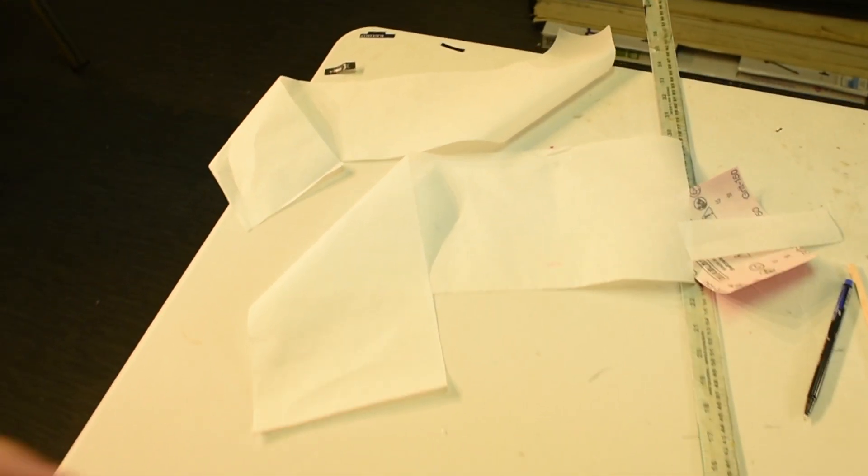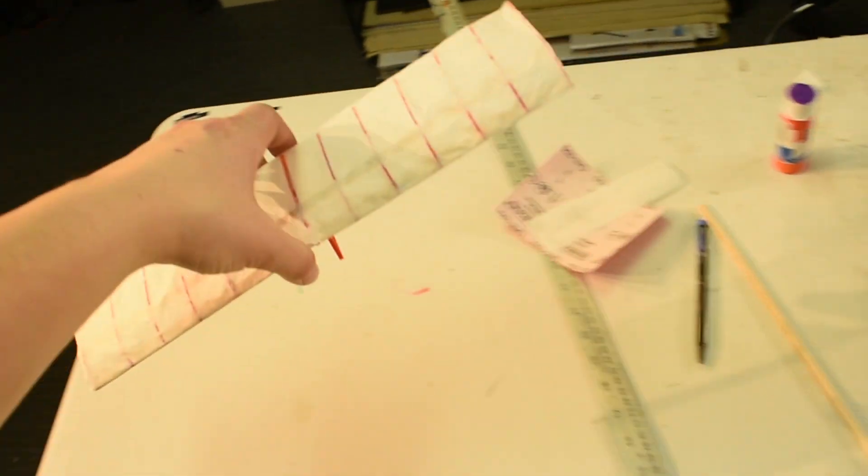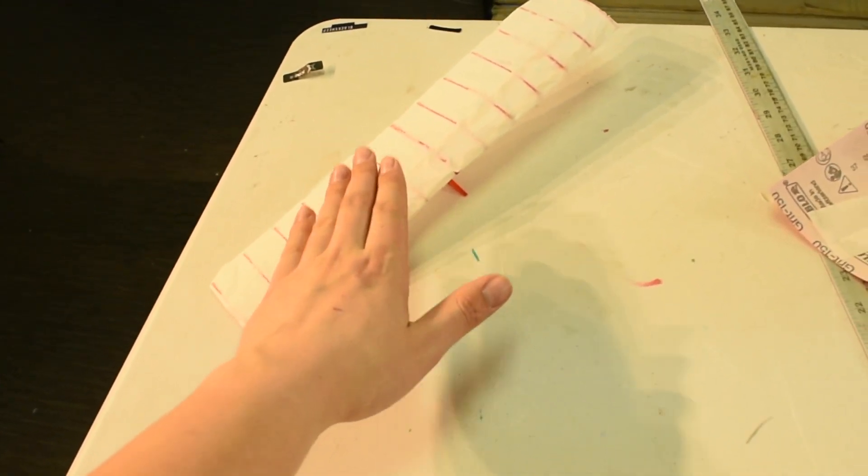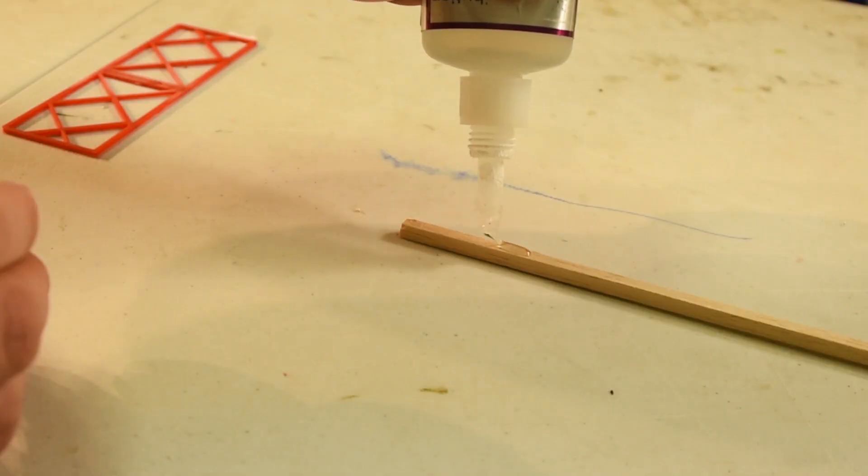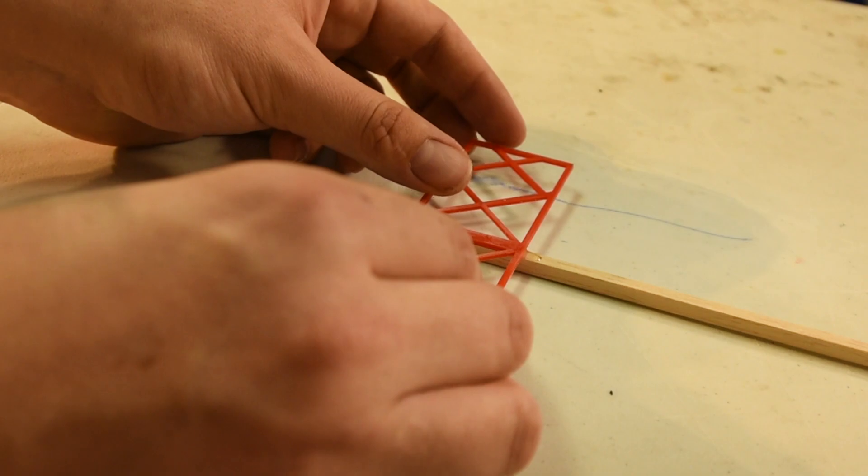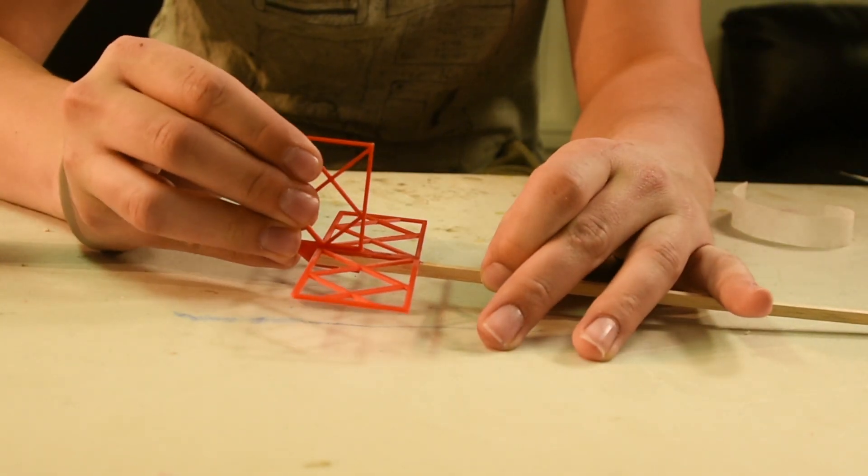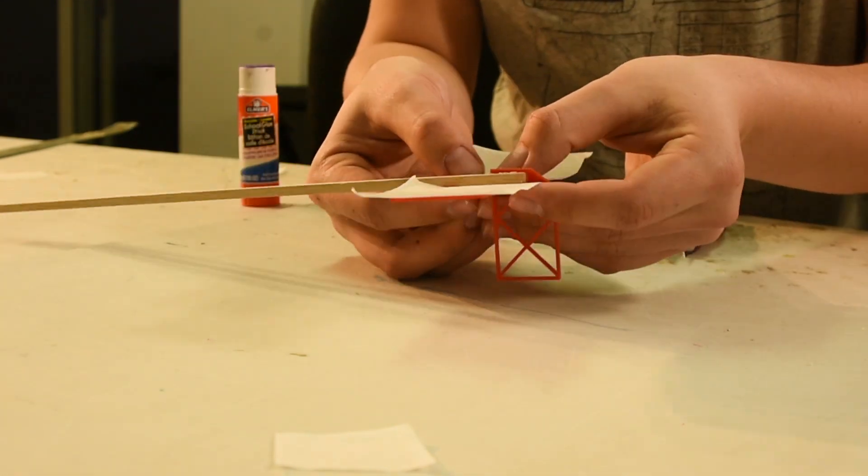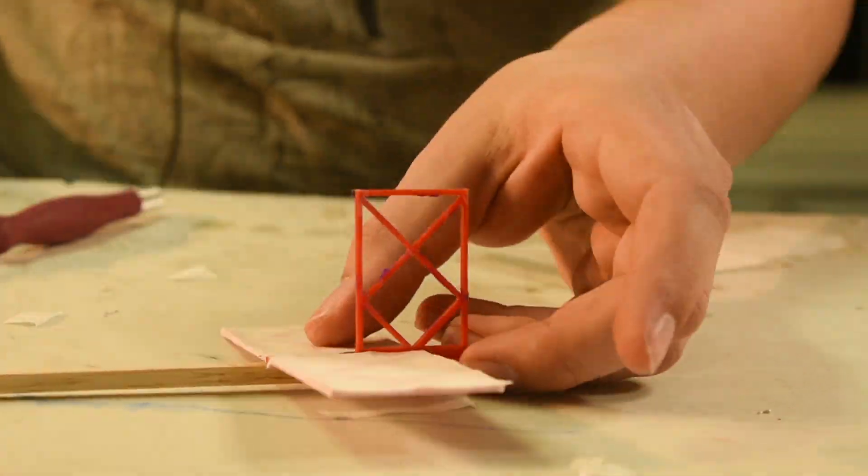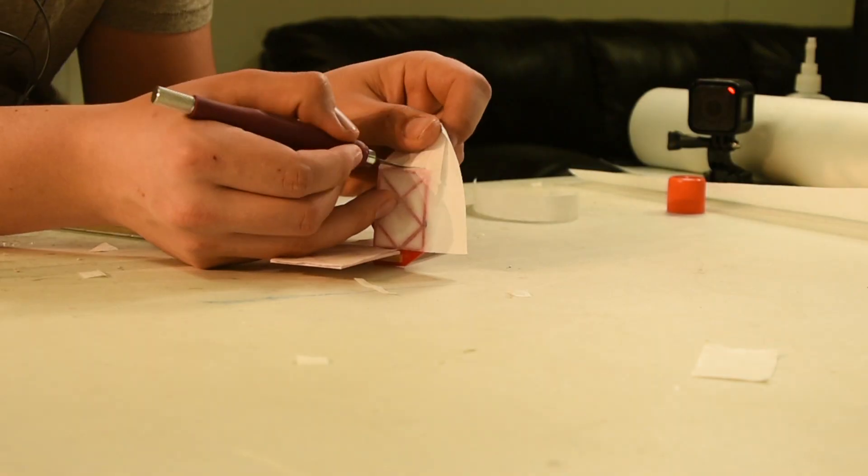All right, so you may be wondering, why did I spray that wing with rubbing alcohol? Well, that's because when you spray this with rubbing alcohol and let it evaporate, it actually shrinks so it should have a smoother finish.